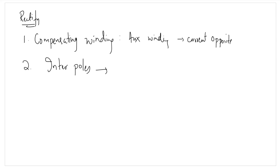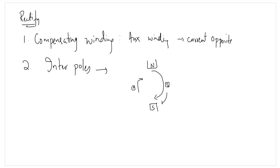In the direction of rotation, if we have a north pole, the interpoles ahead will be a south pole; and where a south pole exists, a north pole interpole will be used. For a four-pole machine we will use four interpoles. The windings on the interpoles are connected in series with the armature. The interpoles are wound such that their magnetic polarity is the same as that of the main pole ahead, as a result of which the interpoles nullify the quadrature axis armature flux.